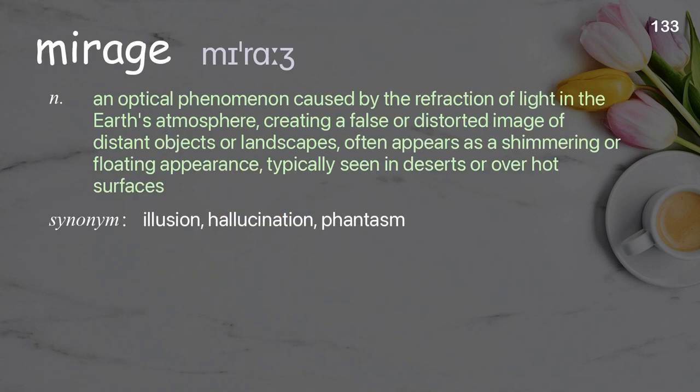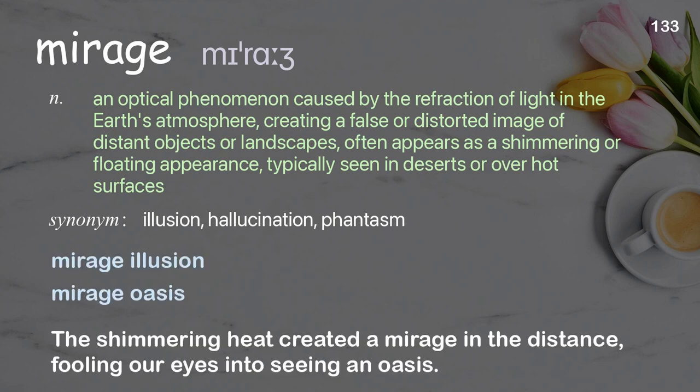Mirage. An optical phenomenon caused by the refraction of light in the Earth's atmosphere, creating a false or distorted image of distant objects or landscapes. Often appears as a shimmering or floating appearance, typically seen in deserts or over hot surfaces. Examples: mirage illusion, mirage oasis. The shimmering heat created a mirage in the distance, fooling our eyes into seeing an oasis.